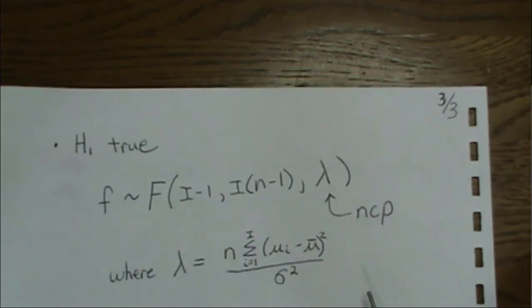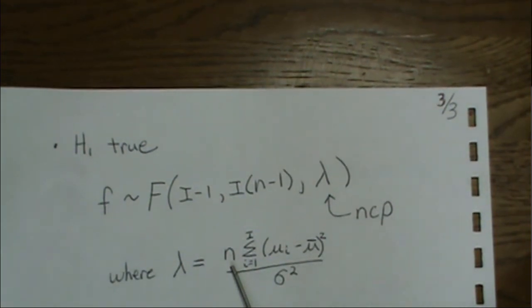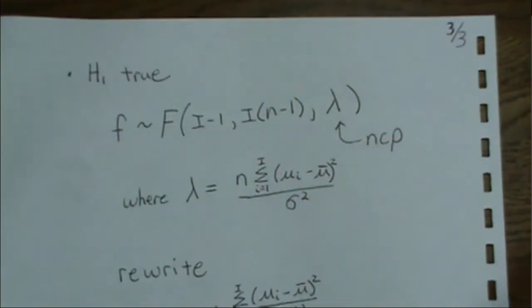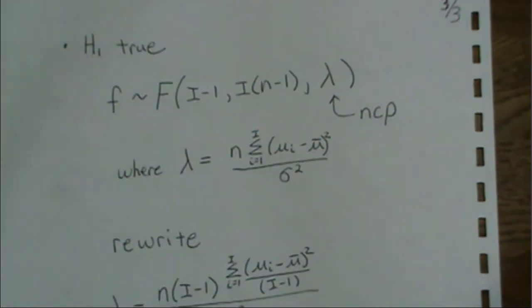But the non-centrality parameter is this. It involves N, which is the number of samples per group, the true variance in your error term, and then it's the sum of the square differences between the true group means and the grand mean. And there's I different groups. So we look at that. Now, this is not what R uses. I mean, it does, but they trick it to look like something else. So we're going to rewrite this.